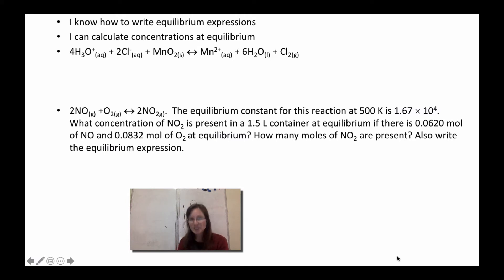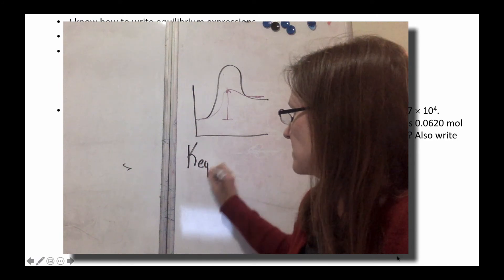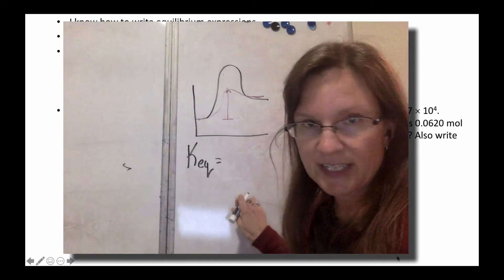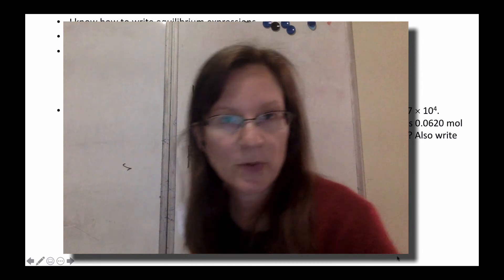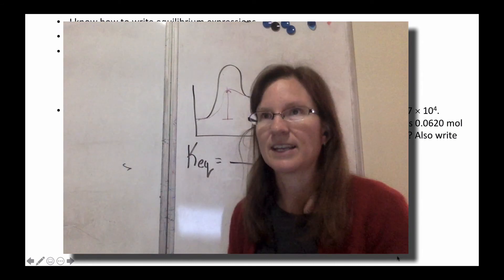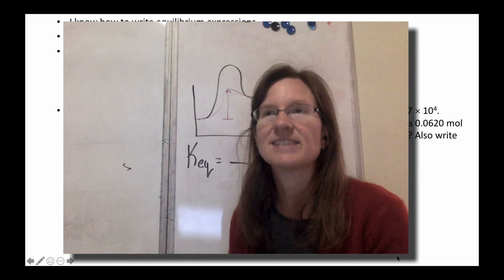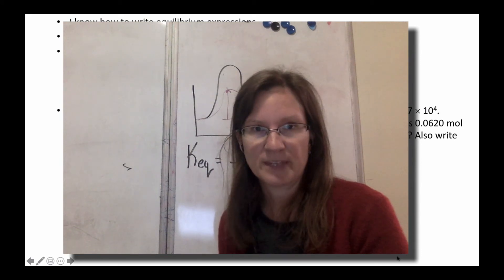Let me get a little bit more into the math stuff. So I know how to write an equilibrium expression and I can calculate things. An equilibrium expression is always K_eq equals, and it's always products over reactants raised to a power of their coefficient. And it's only aqueous things and gaseous things. Solids and liquids are not included.